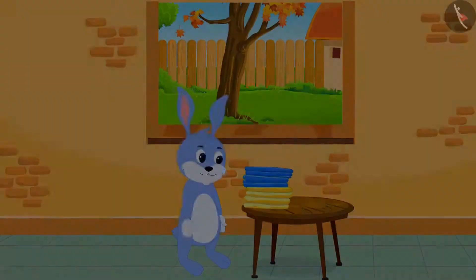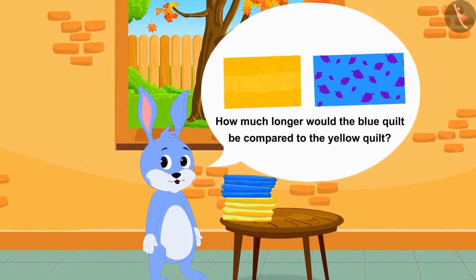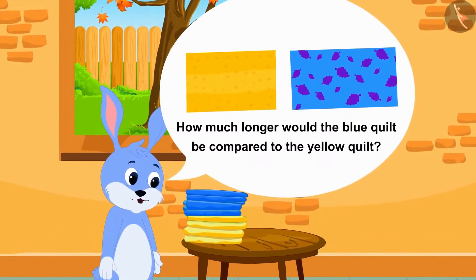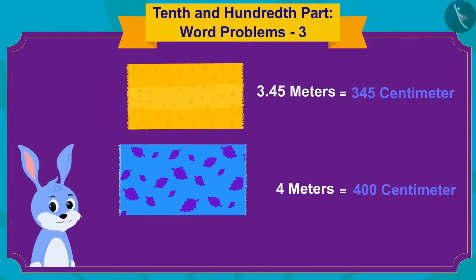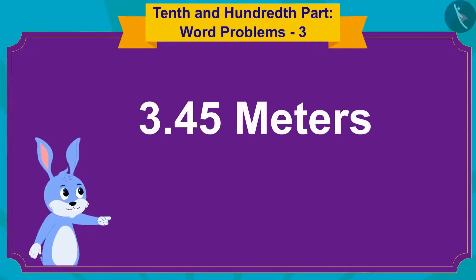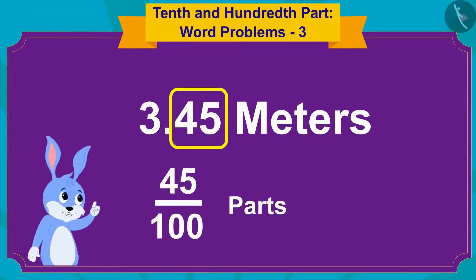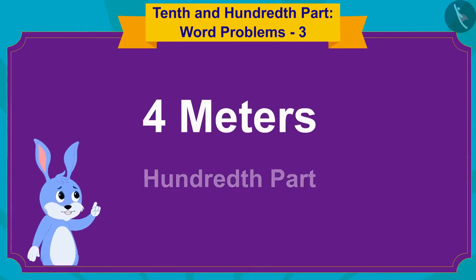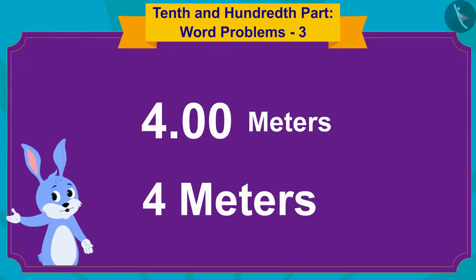Bunny is thinking: how much longer would the blue quilt be compared to the yellow quilt? Let me find the answer by using the subtraction process. In 3.45, 45 is the 45 hundredth part. But there is no hundredth part in 4, so I can also write 4 as 4.00.